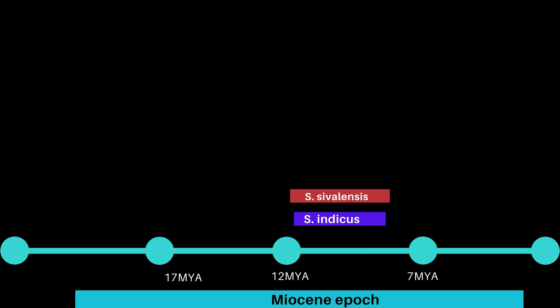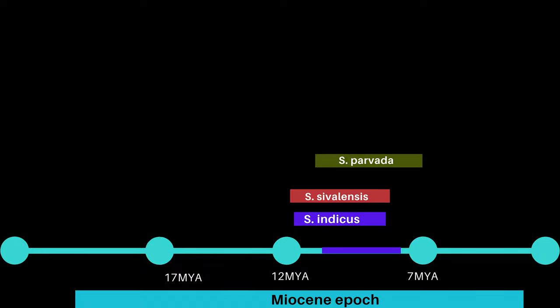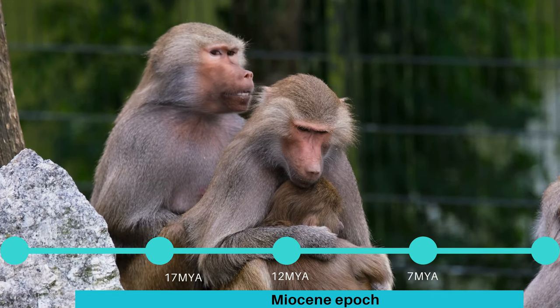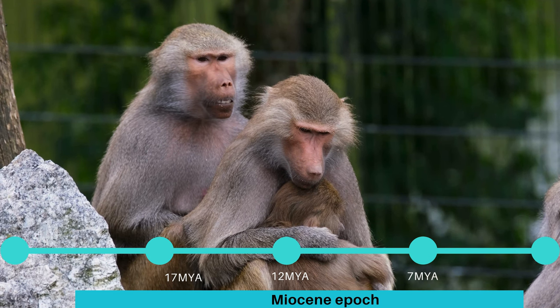Shivapithecus sivalensis lived from 11 to 8.5 million years ago and was larger than indicus with more developed teeth. Shivapithecus parvata is the largest species, known from fossils found in one specific location and dated to around 10.1 million years ago, with very large front teeth. All three species showed significant differences in size between males and females, similar to modern apes.